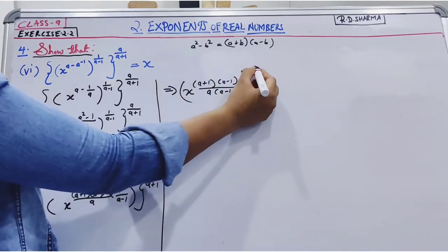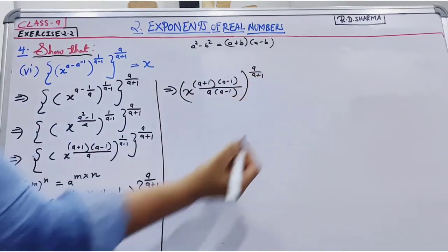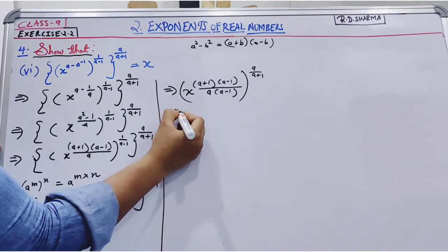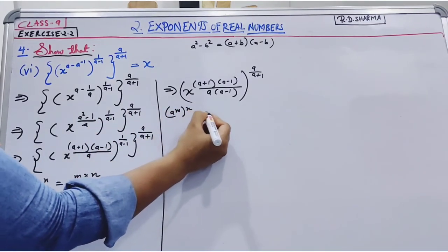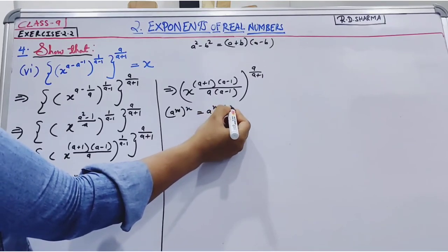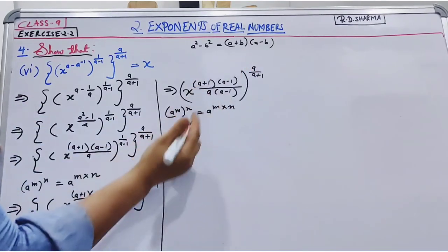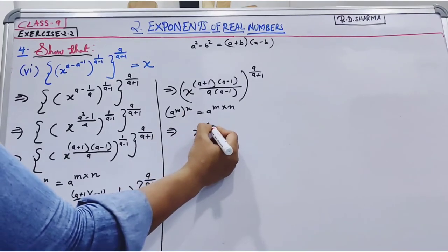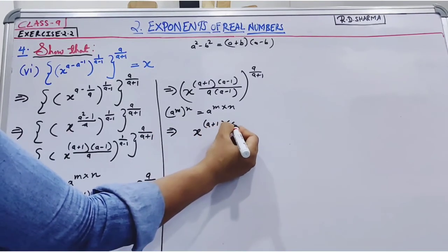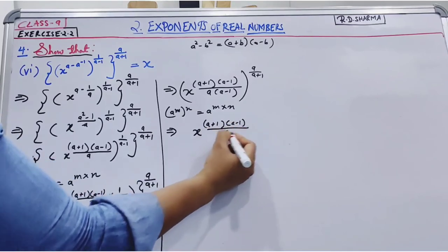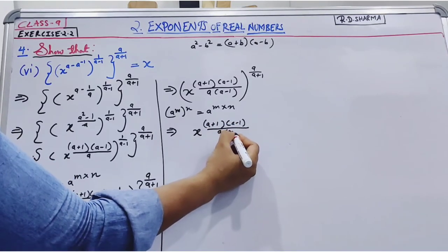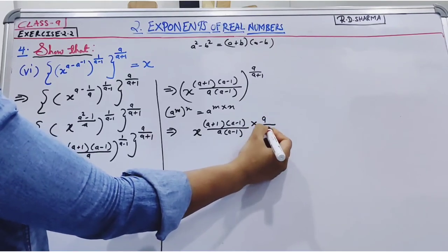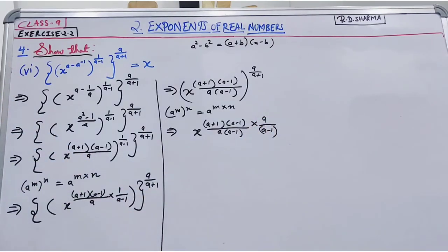Now what's the power currently? a, a plus 1. Now again we'll apply this exponent law, a to the power n to the power n, both powers multiply. So this power multiplies with this. So now my next step will be a plus 1, a minus 1, divide by a, a minus 1, multiply by a, a minus 1.